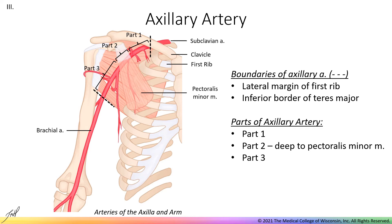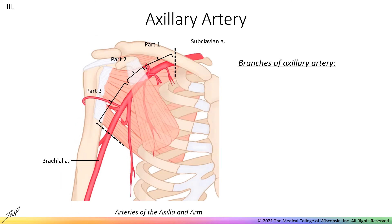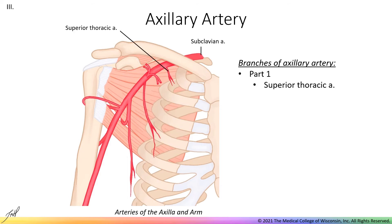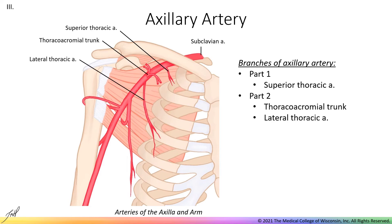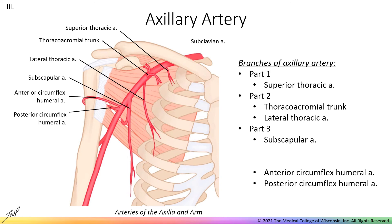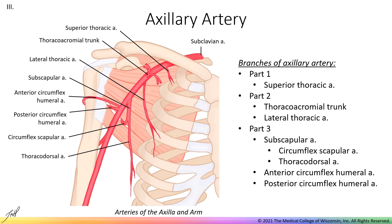Each of these parts gives off several branches — the axillary artery has six branches total. Off the first part is the superior thoracic artery, a small artery on the anterior thoracic wall. The second part has two branches: the thoracoacromial trunk, which emerges from under the pectoralis minor muscle and gives branches towards the pectoral muscles, acromion, clavicle, and deltoid; and the lateral thoracic artery, which runs superficially along the serratus anterior muscle and partially supplies the breast. The third part has three branches: the subscapular artery, which tends to be large; and the anterior and posterior circumflex humeral arteries, which wrap around the surgical neck of the humerus. The subscapular artery also gives off the circumflex scapular artery and the thoracodorsal artery, which runs inferiorly to the latissimus dorsi muscle.